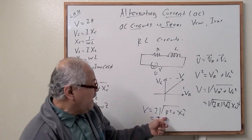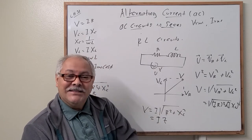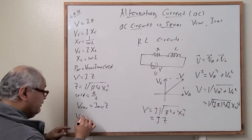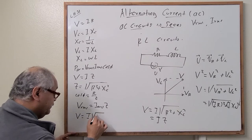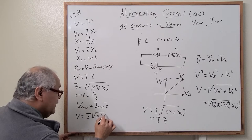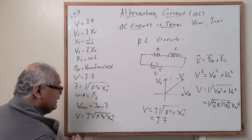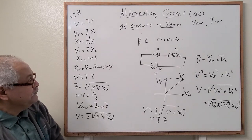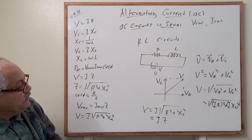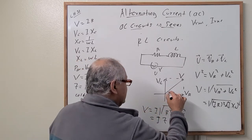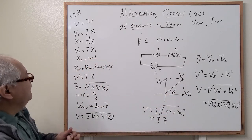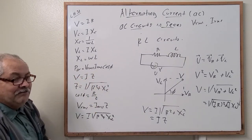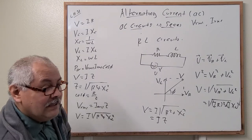For the RL circuit, the voltage equals current times the square root of R squared plus X_L squared, where X_L is the reactance of the inductor. The angle phi gives the power factor, and the average power formula is the same: RMS voltage times RMS current times cosine phi.